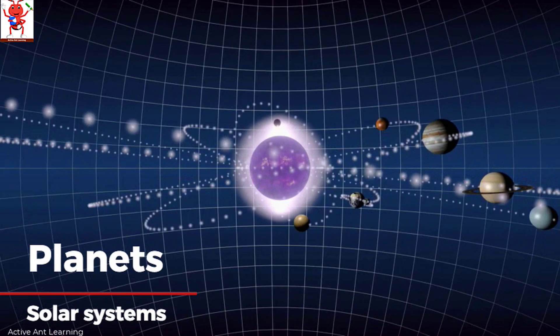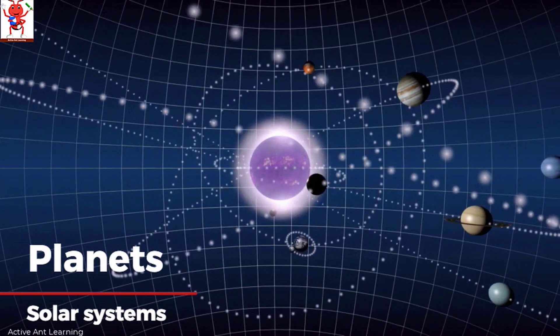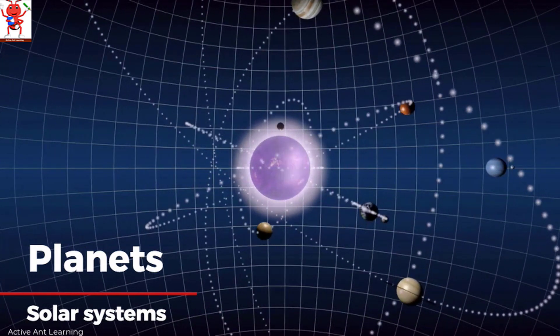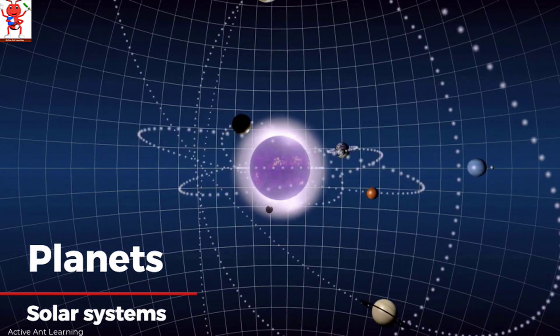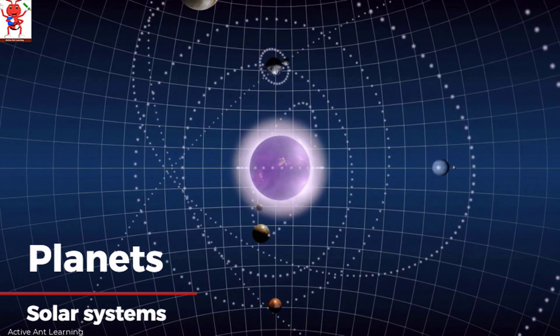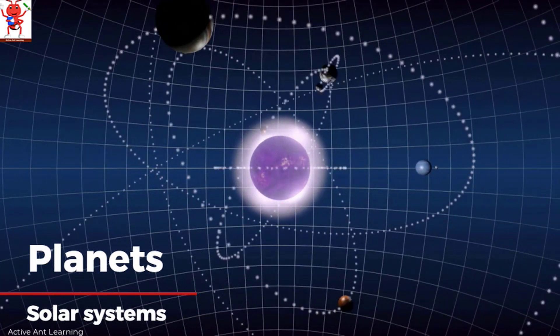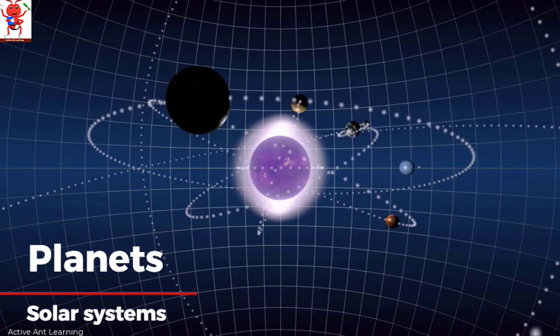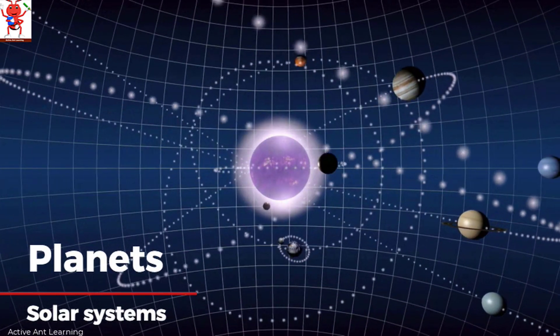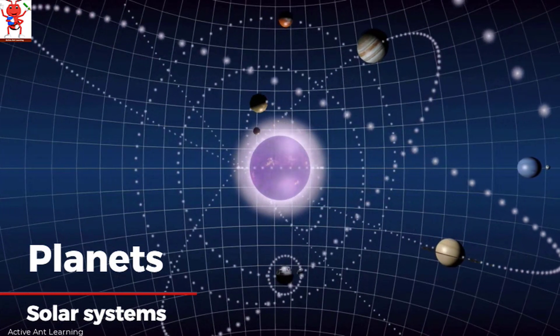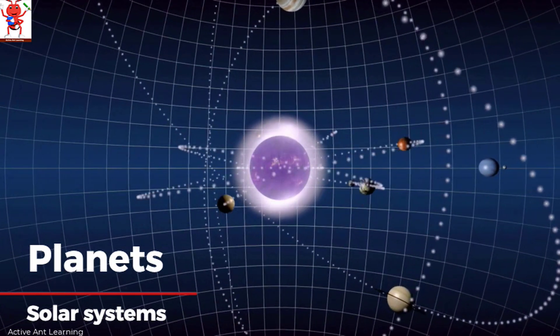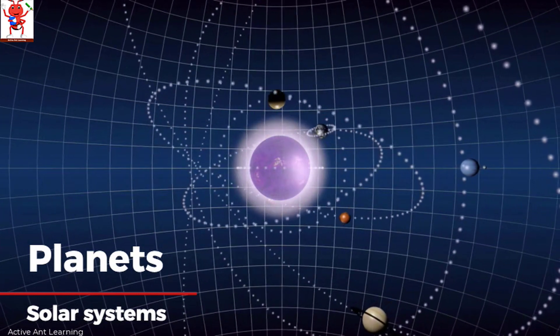There are total 8 planets in our solar system. But friends do you know earlier there were 9 planets but a planet called Pluto spinned and spinned very fast and went out from the solar system. So now there are only 8 planets in our solar system. Yes you are right Anvi. Well done.